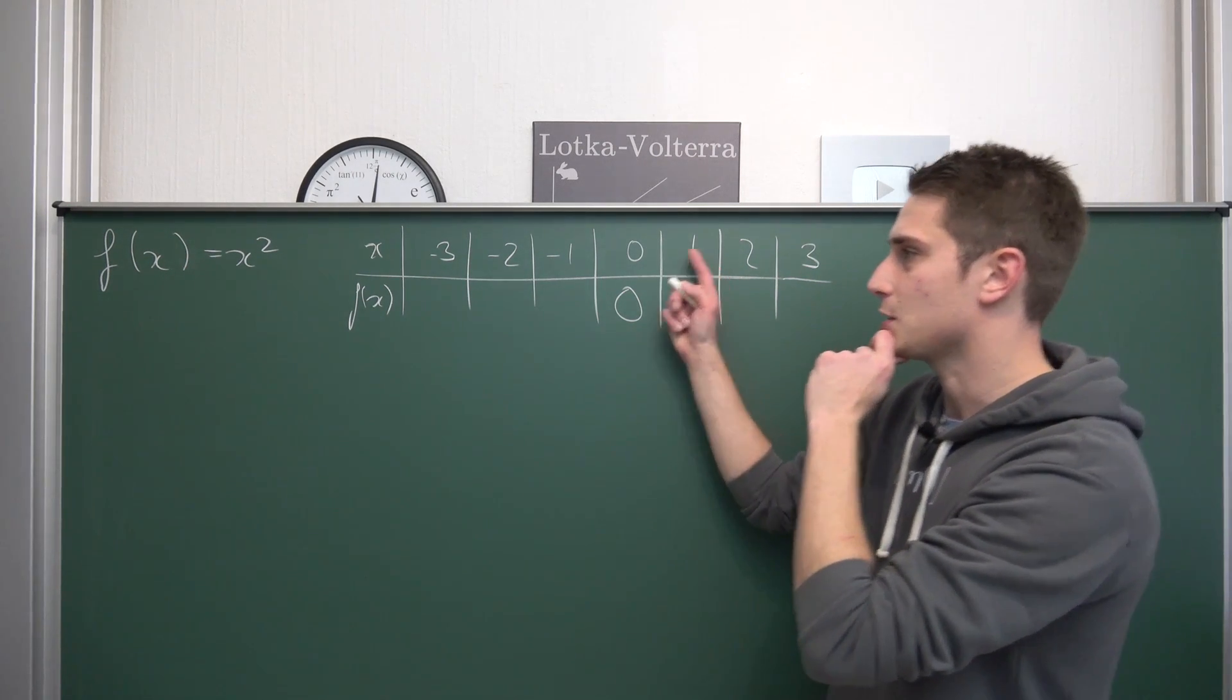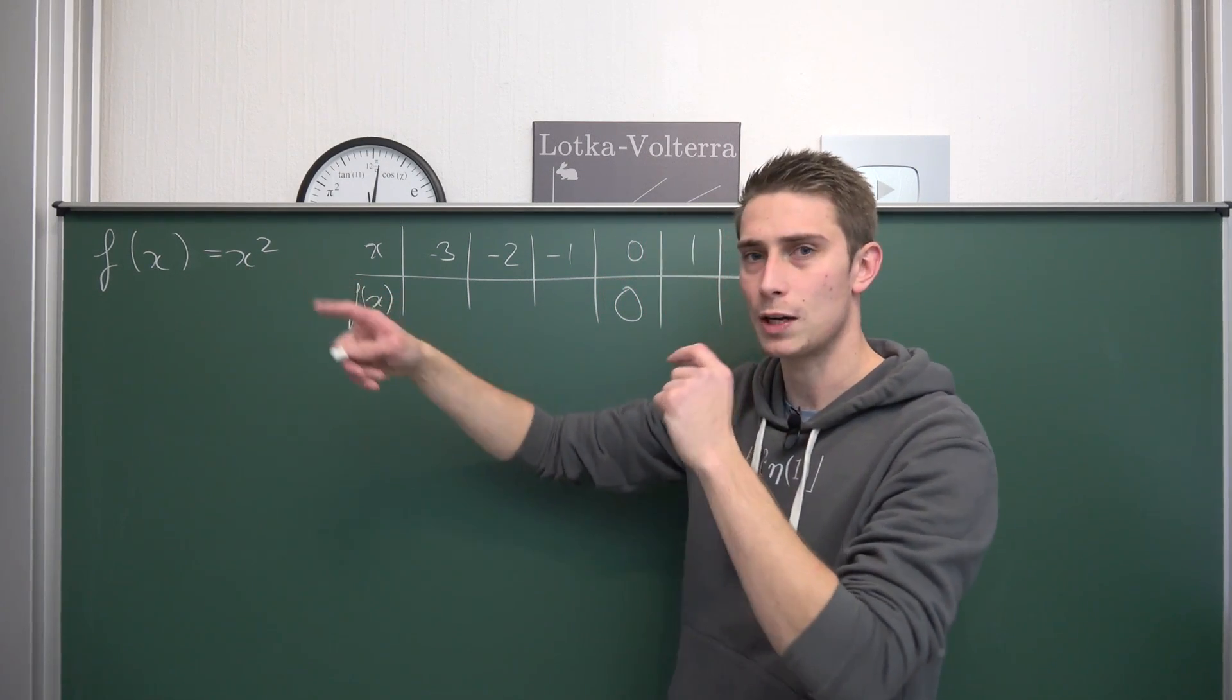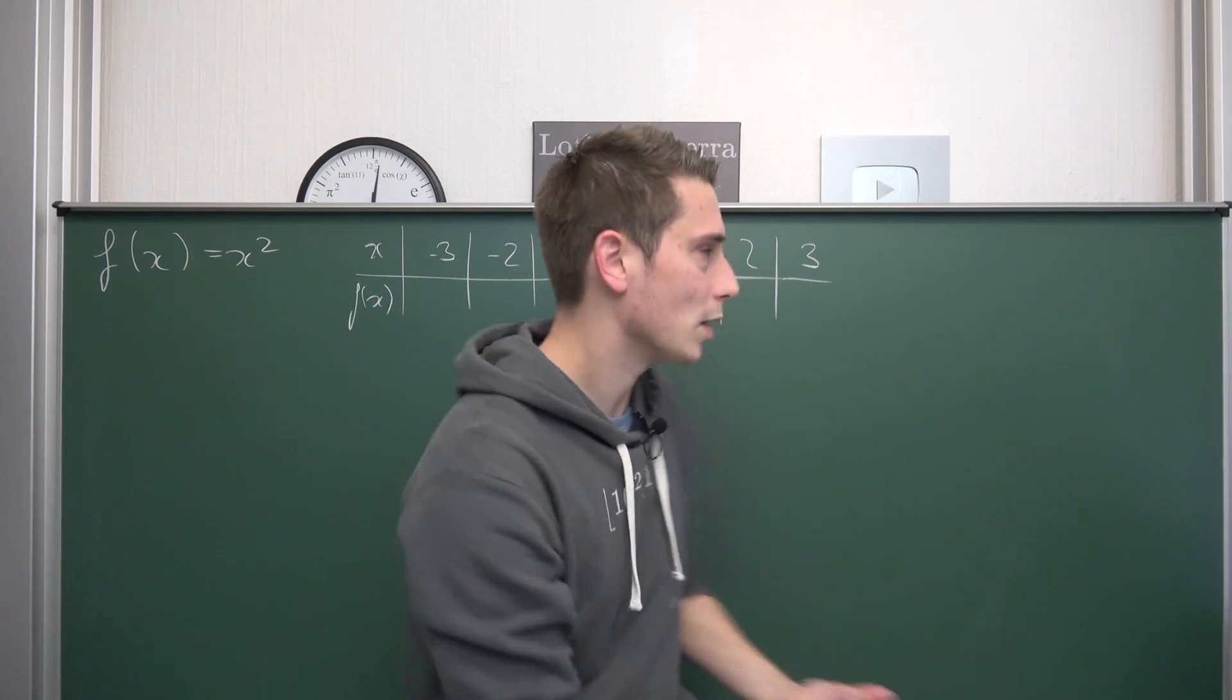Next up, we are going to plug the one into here. So, f of one is going to be one into each and every x, so this gives us one squared, one squared is one times one, this is one, that was also easy.